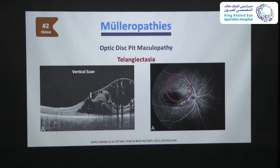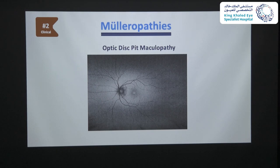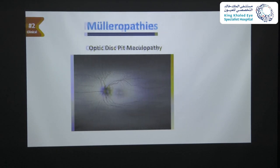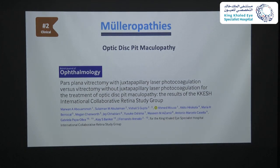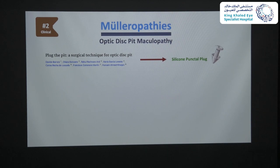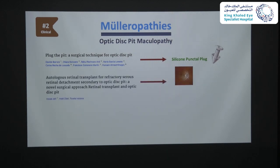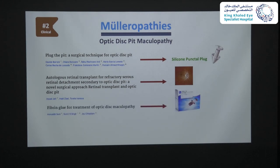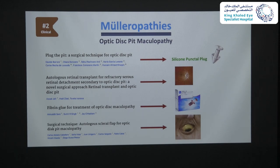It is also interesting to see a report describing telangiectasia in the superior macula in a patient with optic disc pit maculopathy, suggesting that Müller cell dysfunction might lead to telangiectasia, as in patients with MacTel. The eye had been treated with laser elsewhere with no success. From a 2016 article by the Kellogg collaborative retina group, juxtapapillary laser combined with vitrectomy had no additional benefit. Other techniques to plug the pit include silicon punctal plug, autologous retinal transplant, fibrin glue, and autologous scleral flap — and of course, all were reported as successful.